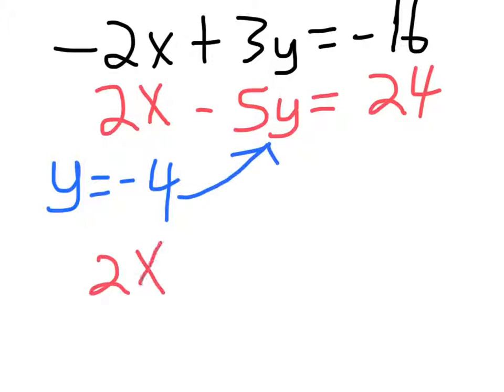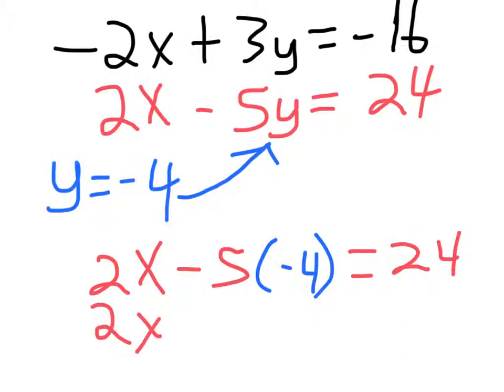Plug it into the equation, and you can solve for the missing variable. So instead of y, I'm putting negative 4. So we've got 2x. Negative 5 times negative 4 gives us 20, plus 24.